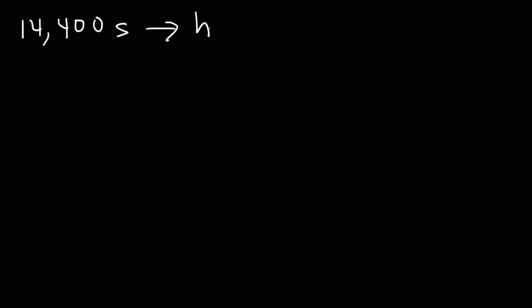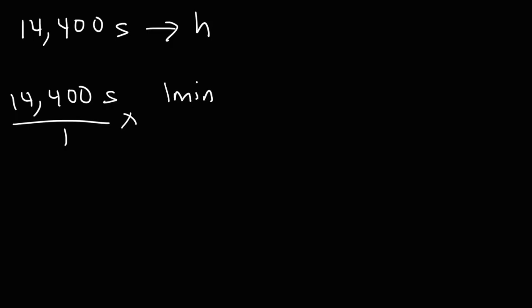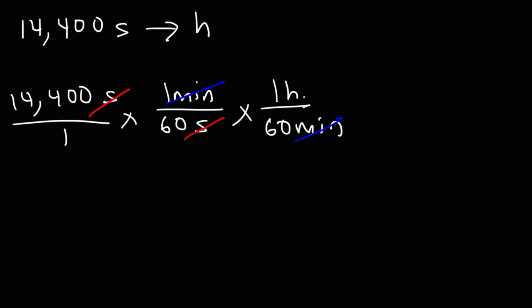Let's try another one: convert 14,400 seconds into hours. We follow the same procedure — first convert seconds into minutes (1 minute equals 60 seconds), then convert minutes into hours (1 hour equals 60 minutes). Cancel the unit minutes. It's going to be 14,400 divided by 60, which is 240, then divide by 60 again, giving you 4 hours.